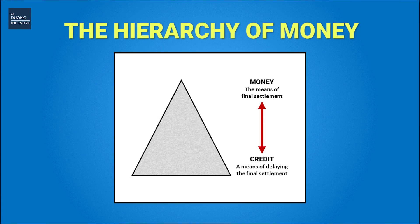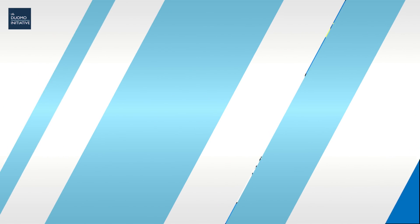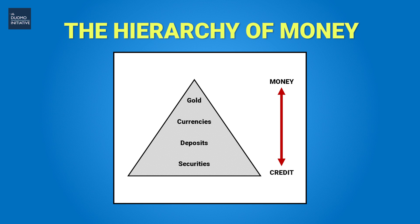Take a look at this chart. We can see that there are two extremes. At the top we have money, which we would refer to as the means of final settlement, and at the bottom we have credit, which is a promise to pay money — in other words a means of delaying the final settlement. We all know what money is and what credit is, or at least we think we do, but what happens if we start to include financial instruments? At what point do we draw the line between what we call money and what we call credit?